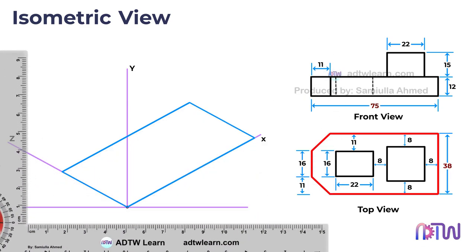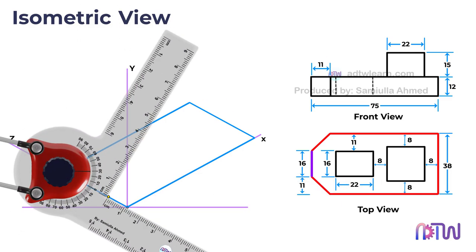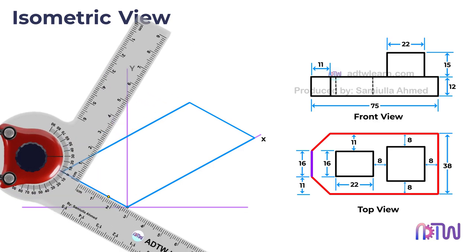This will serve as a reference. From the edge we can observe that a specific portion is located 11 millimeters away, so mark a point 11 millimeters from the edge. Then draw a line measuring 16 millimeters in length.